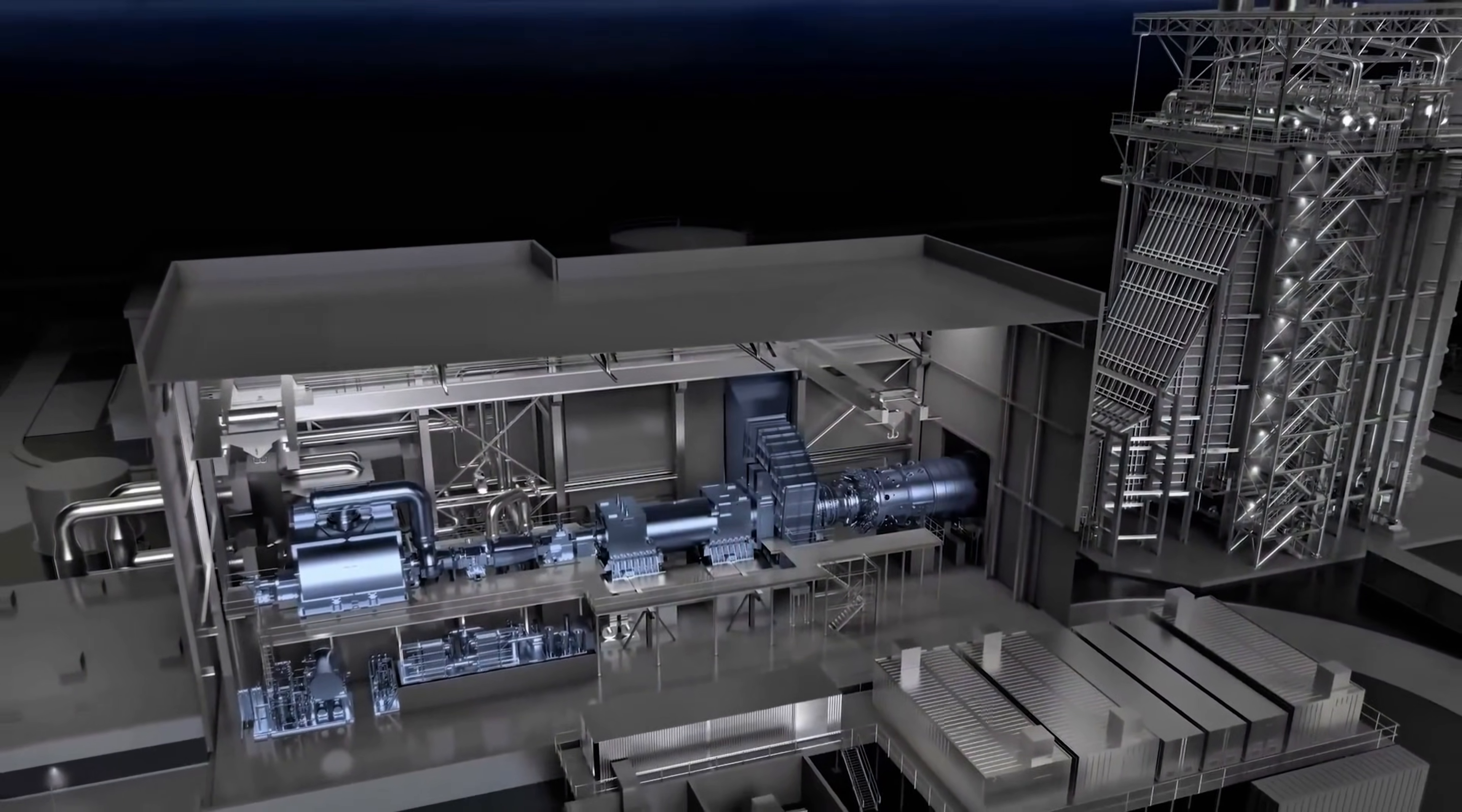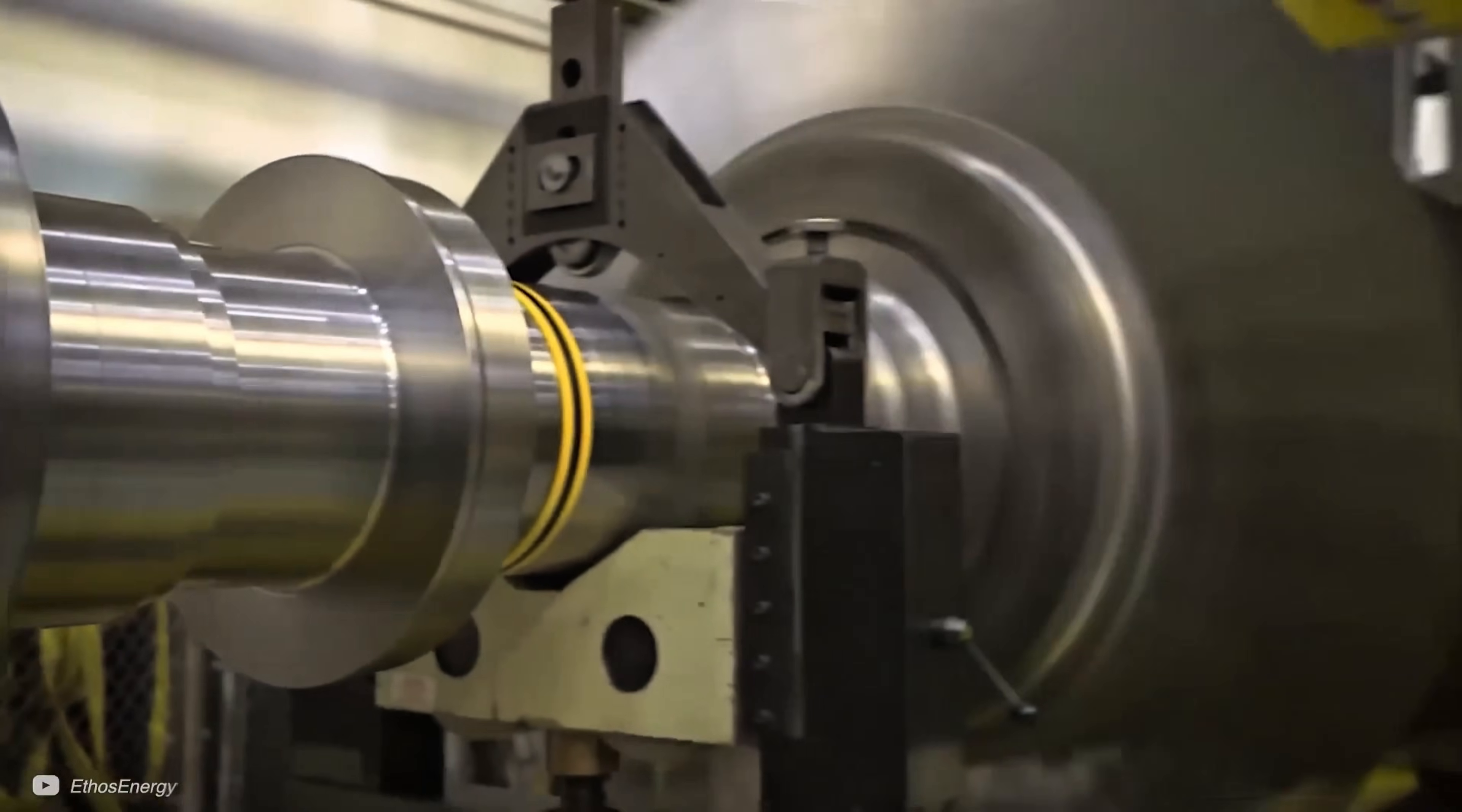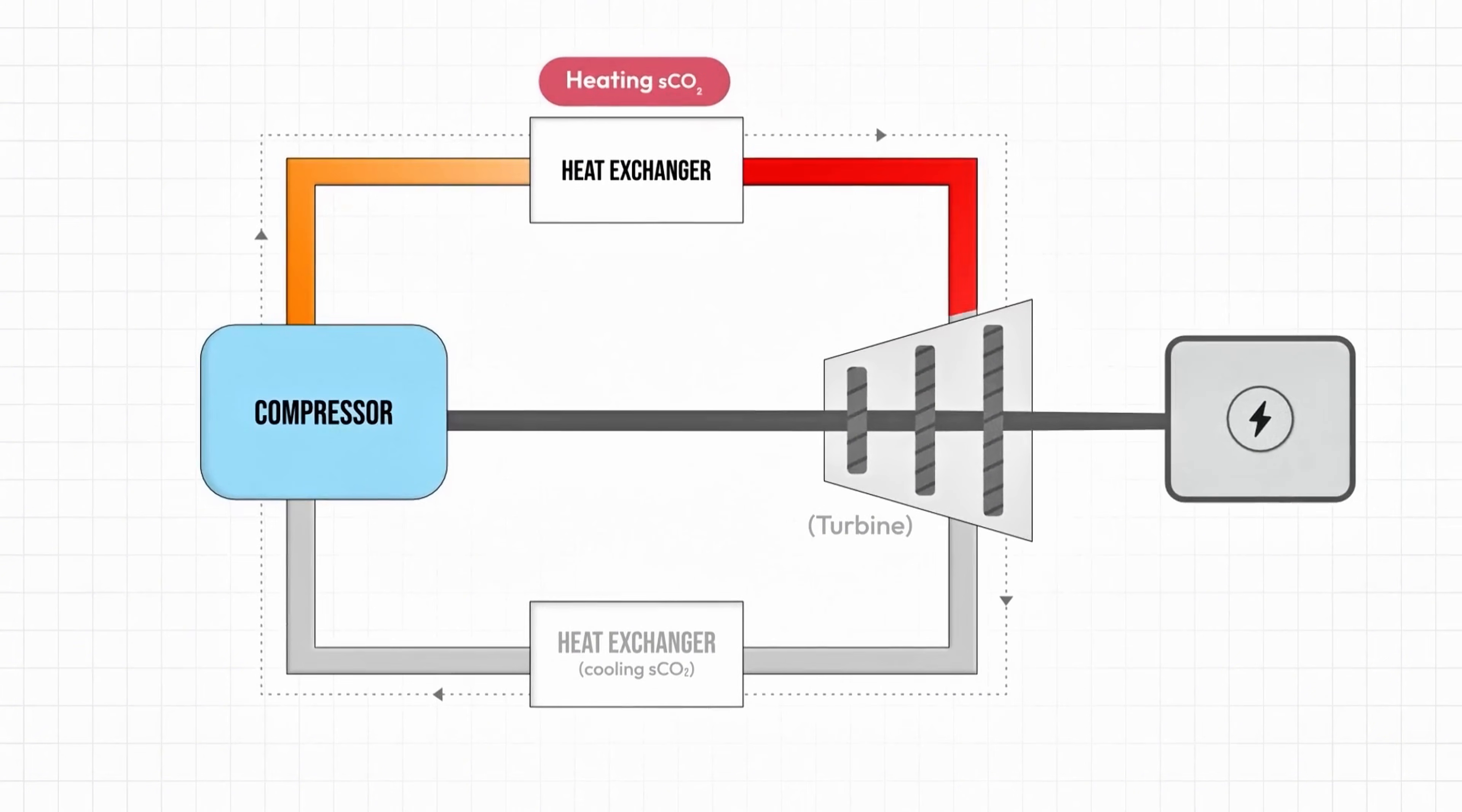Reaching supercritical conditions for CO2 is much easier than it sounds. We often talk about supercritical water, some experimental reactors do that. But water's critical point is 374 degrees Celsius and 220 bar, extreme even for modern boilers. CO2 by comparison becomes supercritical at only 31 degrees Celsius and 74 bar, though in our power cycle we operate it much hotter, like 500 to 700 degrees Celsius.